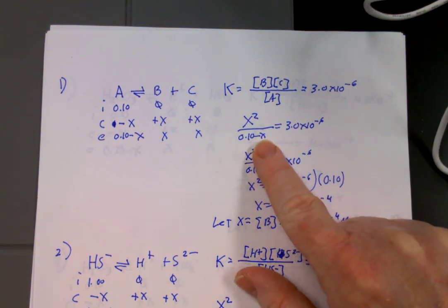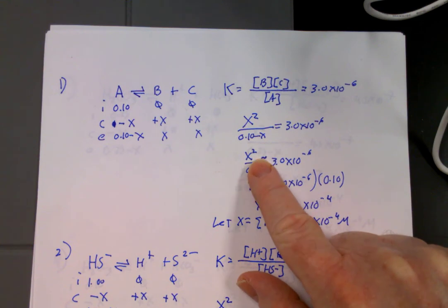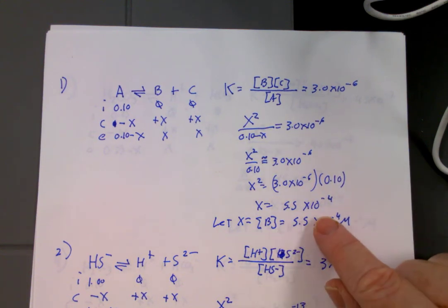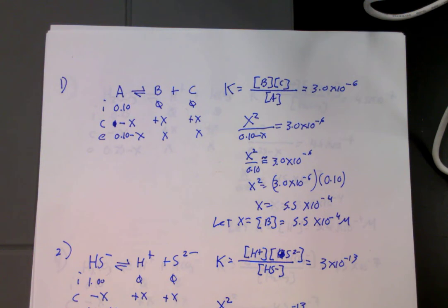I approximate away the minus x, so I have x squared over 0.1 is approximately equal to 3.0 times 10 to the negative 6th. Then that's really straightforward for solving. x is equal to 5.5 times 10 to the negative 4th. So since we're looking for the concentration of B, let x equal the concentration of B, which is 5.5 times 10 to the negative 4th molar.